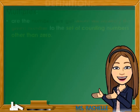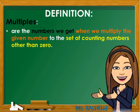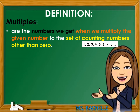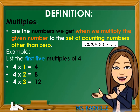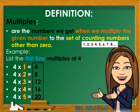Now, let's define the word multiples. Multiples are the numbers we get when we multiply the given number to the set of counting numbers other than 0. When we say set of counting numbers except 0, start counting from 1, 2, 3, 4, 5, 6, 7, 8, and so on. Let's have an example: List the first 5 multiples of 4. Our given number is 4. We need to multiply 4 to the first 5 counting numbers: 4×1=4, 4×2=8, 4×3=12, 4×4=16, 4×5=20. So 4, 8, 12, 16, 20 are the first 5 multiples of 4.